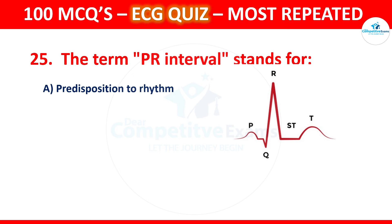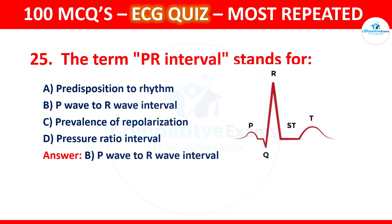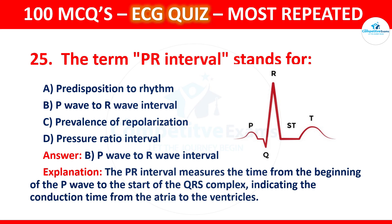Question 25: What does the term PR interval stand for? Options are predisposition to rhythm, P wave to R wave interval, prevalence of repolarization, or pressure ratio interval. The correct answer is P wave to R wave interval. The PR interval measures the time from the beginning of the P wave to the start of the QRS complex, indicating the conduction time from the atria to the ventricles.